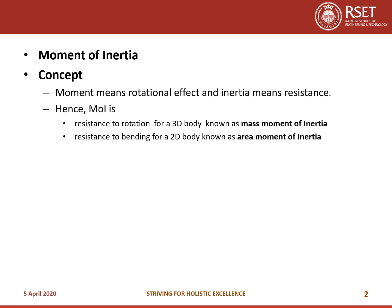So if you combine these two we get the concept of Moment of Inertia. Moment of Inertia is the resistance to rotation. If you consider a 3-dimensional body with mass, we call that mass Moment of Inertia. If you are considering a 2-dimensional body like a thin lamina, then the resistance of that lamina to bending is known as area Moment of Inertia. So we have two types: mass Moment of Inertia and area Moment of Inertia.